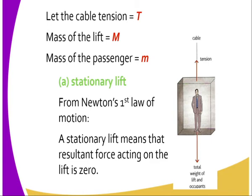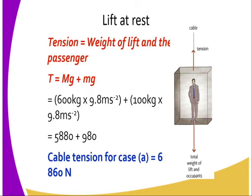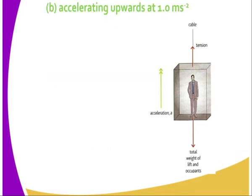A body remains in its state of rest or uniform motion unless acted upon by an external force. So the lift at rest gives us tension T equal to the weight of the lift plus the weight of the passenger: T = Mg + mg, which gives us a total of 6860 Newtons.